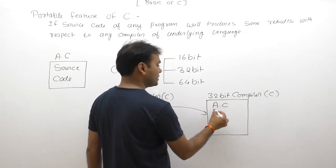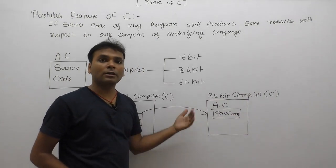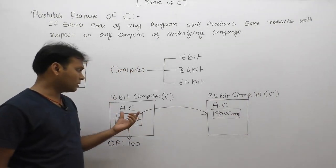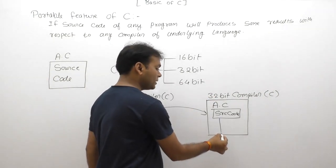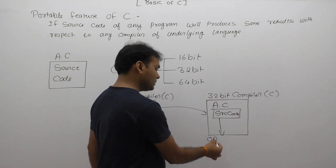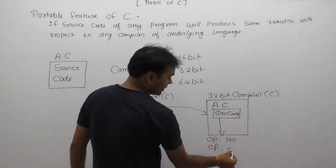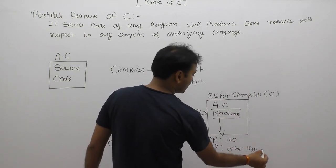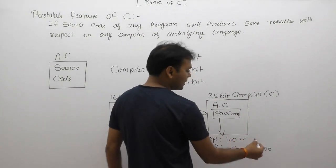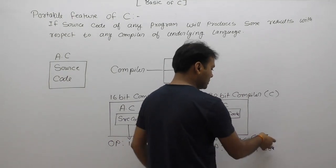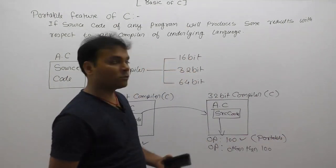We are copying the 'a.c' file — that is, the source code, not compiled code — to use with a 32-bit compiler. The same source code previously used with a 16-bit compiler is now used with a 32-bit compiler. If after executing it gives the same result of 100, then the source code is considered portable and the underlying language is also known as a portable programming language.